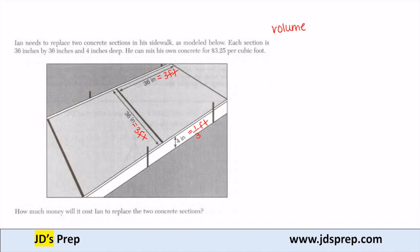For each section, the volume is length times width times height. We just converted them to feet, so the length is 3, the width is 3, and the height is 1 third. When I multiply those together, I get a volume of 3 cubic feet for each section.